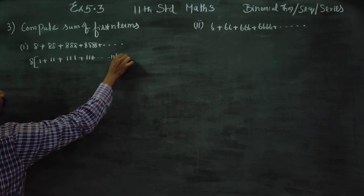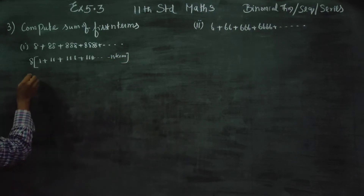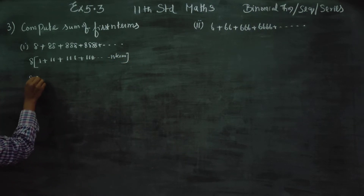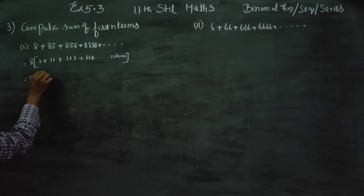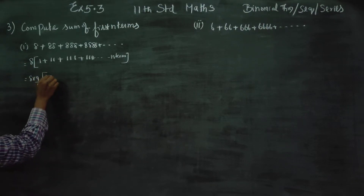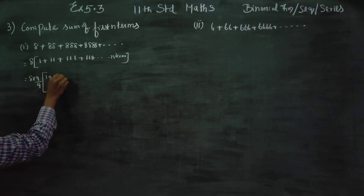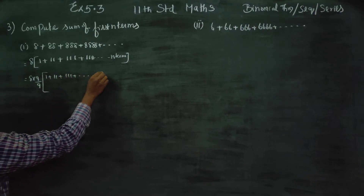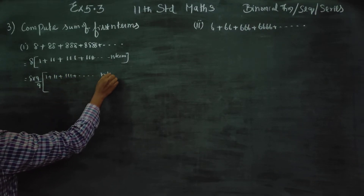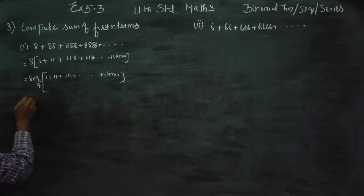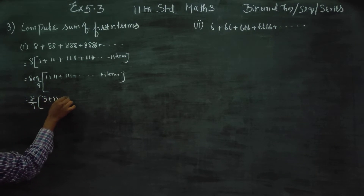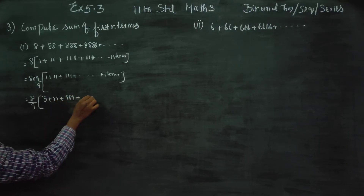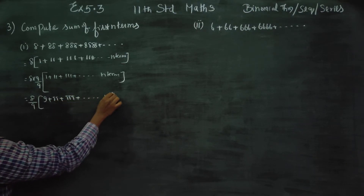This is step number 1. Next stage: multiply and divide by 9. So we have 1 plus 11 plus 111 dot dot dot n terms. Now, multiply and divide by 9: this gives 8 by 9 of the quantity 9 plus 99 plus 999 plus dot dot dot n terms.